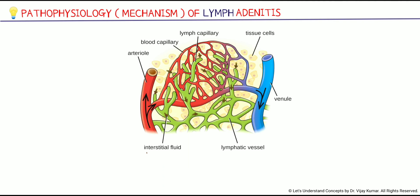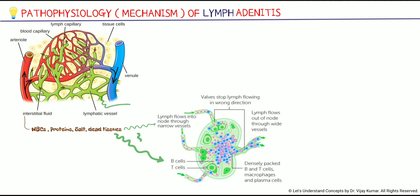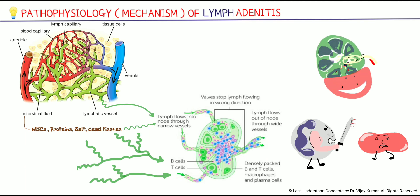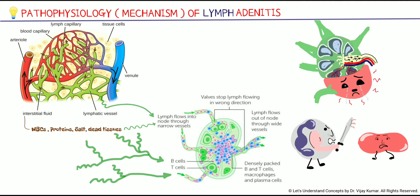Lymph is a clear fluid containing immune cells or WBCs, proteins, salt, and dead tissues for disposal. The primary function of lymph nodes is to harbor the disease-fighting cells, and to filter lymph before it re-enters circulation. Bacteria is captured during filtration, and there starts the fight between immune cells and bacteria inside the lymph node, resulting in them becoming inflamed and painful. This condition is referred to as Lymphadenitis.